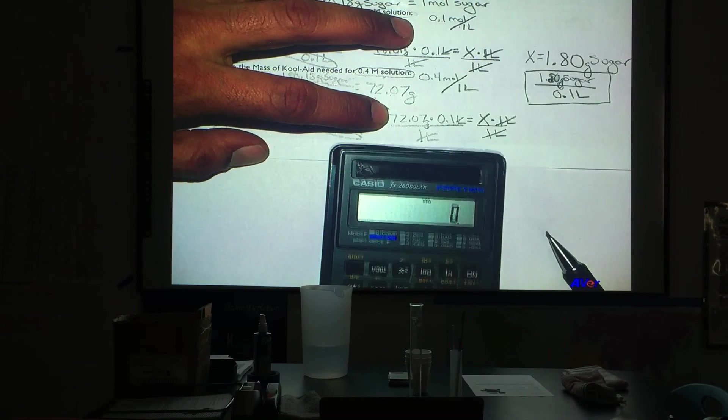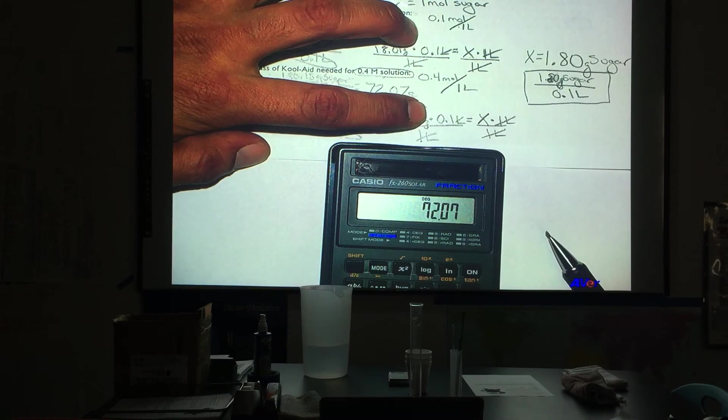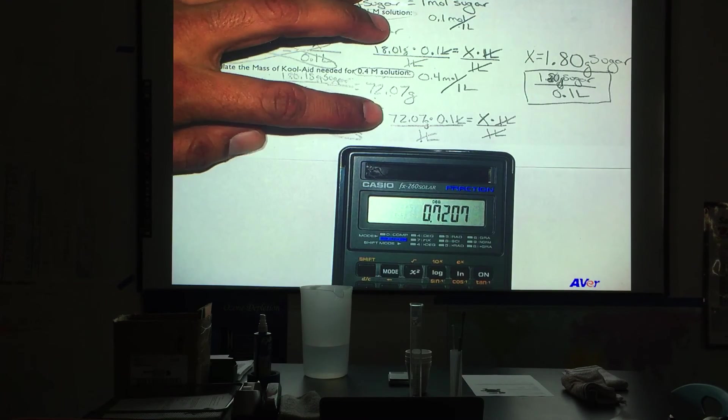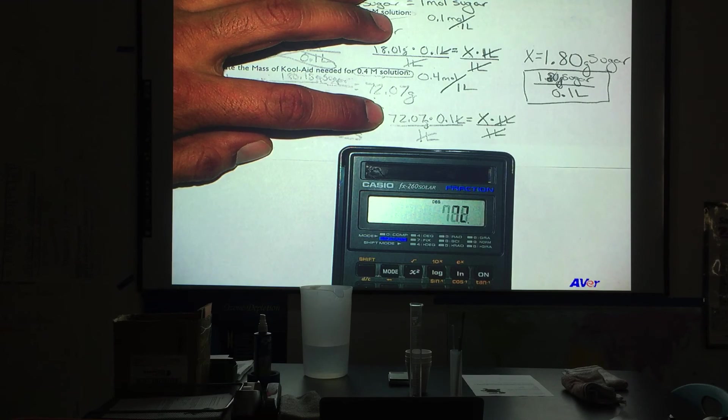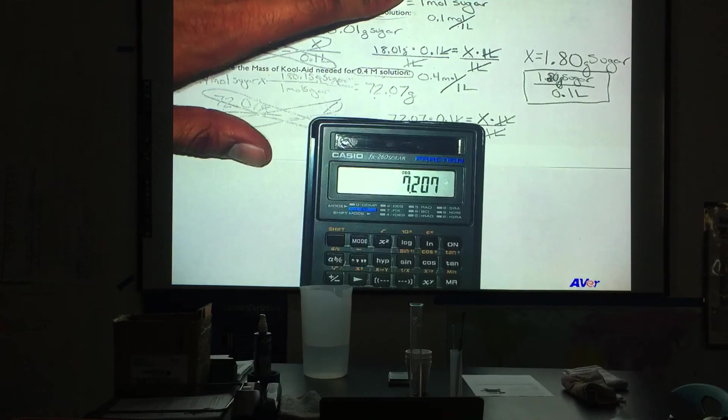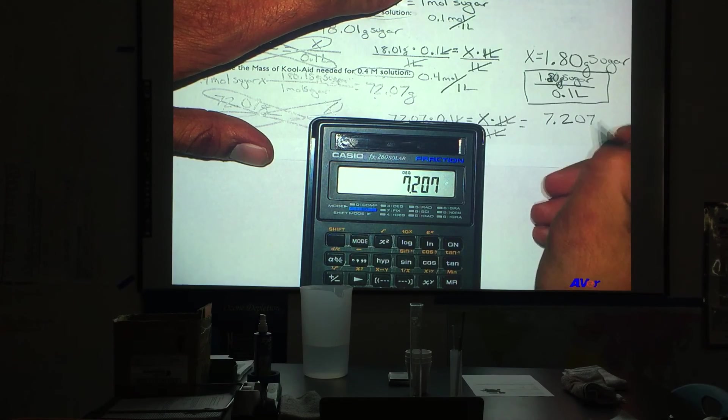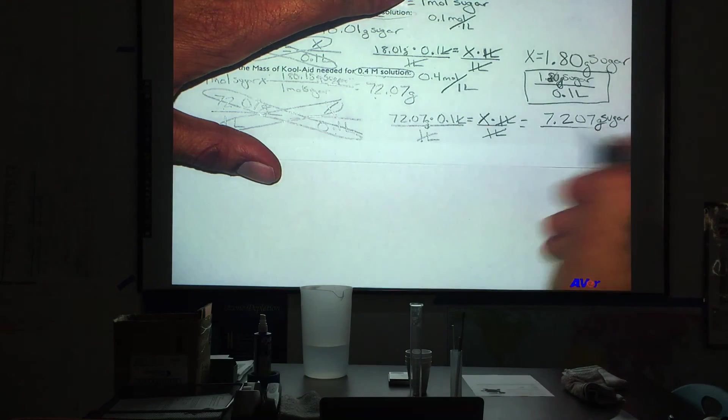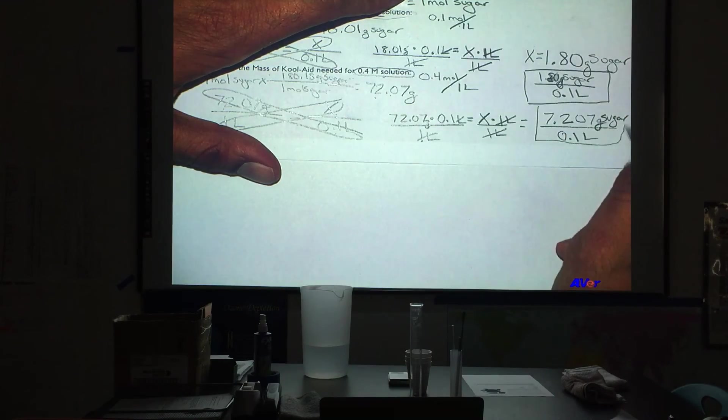72.07 times 0.01 equals, and that will take us to a different number here. I think I made an error. I am going to redo that. 72.07 times 0.1 equals, and yes. So there you can see that now I did make that error, and it is 7.207 grams of sugar will be needed to make 0.1 liters of this solution.